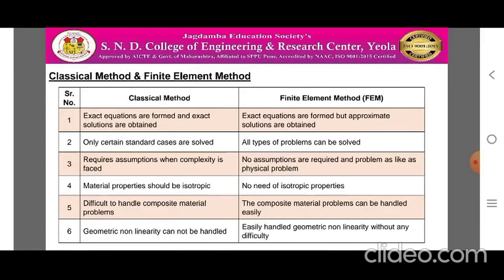The first comparison is Classical Method versus Finite Element Method. The Classical Method is the standard method used to solve physical problems with the help of analytical solutions, while the Finite Element Method is based on element discretization and obtaining the solution at each point. Point one: in case of Classical Method, exact equations are formed and exact solutions are obtained. But in case of Finite Element Method, exact equations are formed like Classical Method, but approximate solutions are obtained.